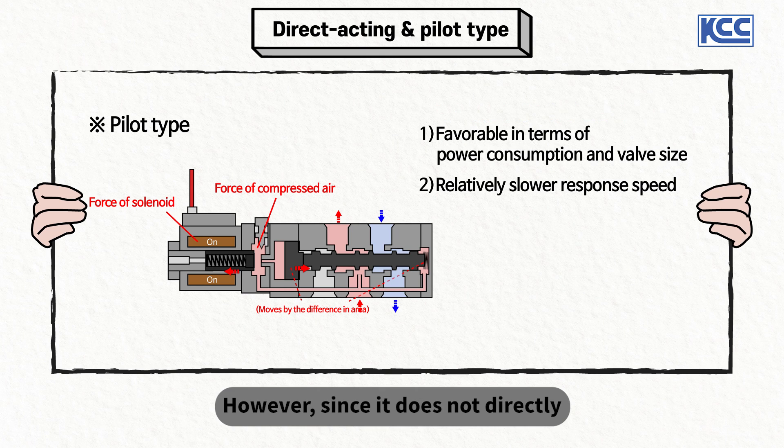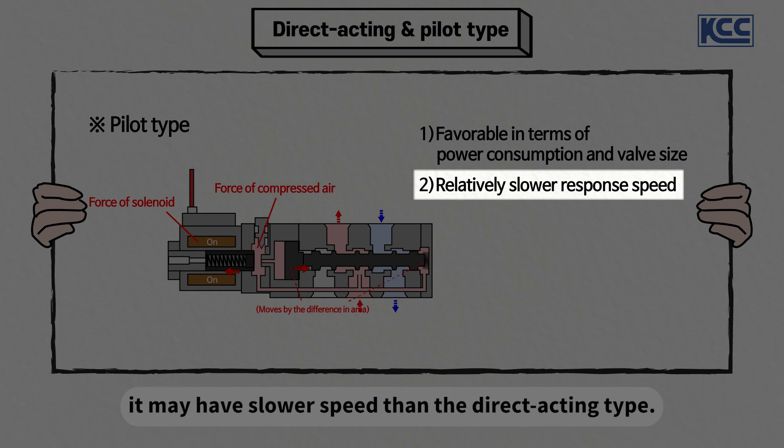However, since it does not directly operate a valve by magnetism, it may have slower speed than a direct acting type.